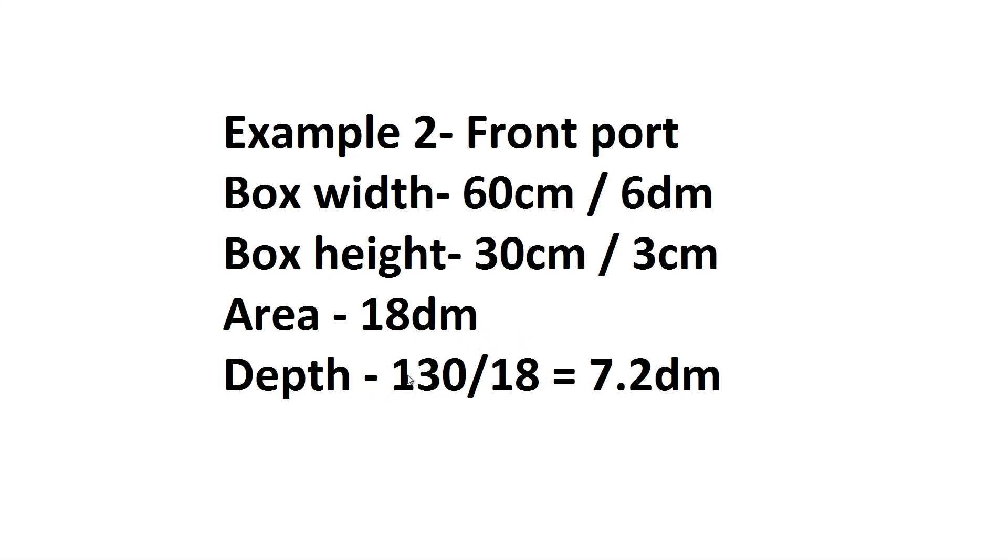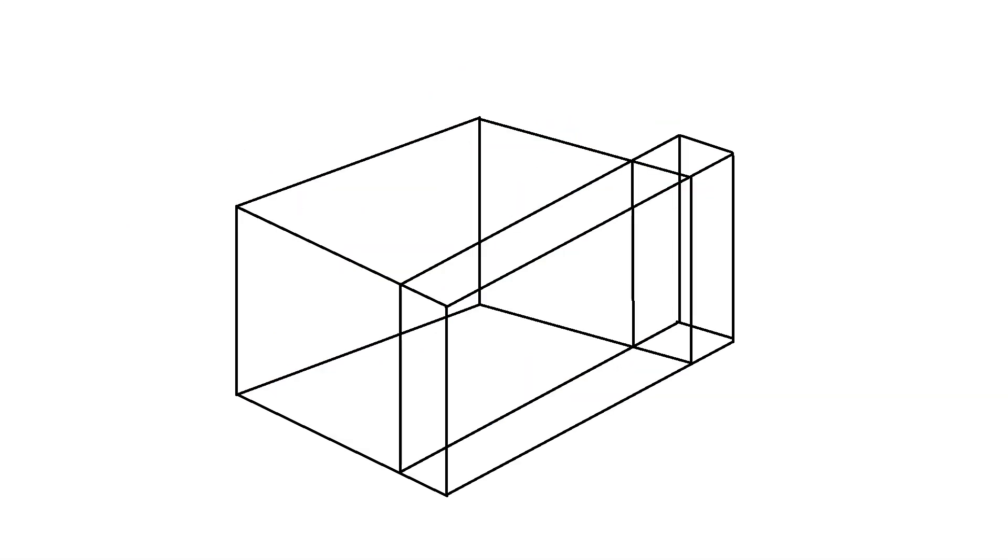The depth of the box is the same equation: 130, except divided by 18 instead of divided by 30, which leaves us with a depth of 7.2 decimeters. Now you can probably notice a bit of a problem with this, which is an 8 decimeter port will not fit in a 7.2 decimeter deep box. So how do we deal with this problem?